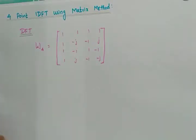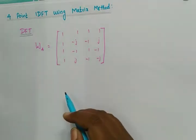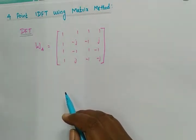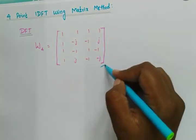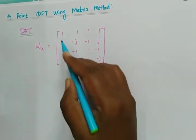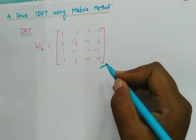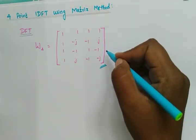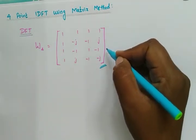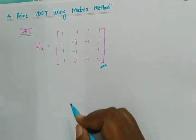Good morning. Today we will see 4-point IDFT using matrix method. In the previous class we have seen 4-point DFT and 8-point DFT using matrix method, and there we have solved W4. This is the twiddle factor as 1 1 1 1. Those who have not seen the previous video can check how you are getting these values in the matrix form.